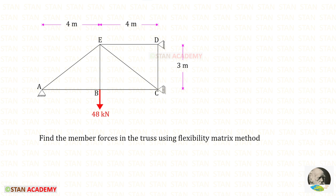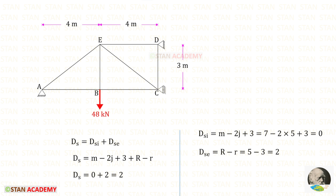Hello everyone. Today we are going to find the member forces in this truss using the flexibility matrix method. This is a statically indeterminate truss. We need to find the degree of static indeterminacy. To find the internal degree of static indeterminacy, this is the formula: m is the number of members. Let us count the members: 1, 2, 3.